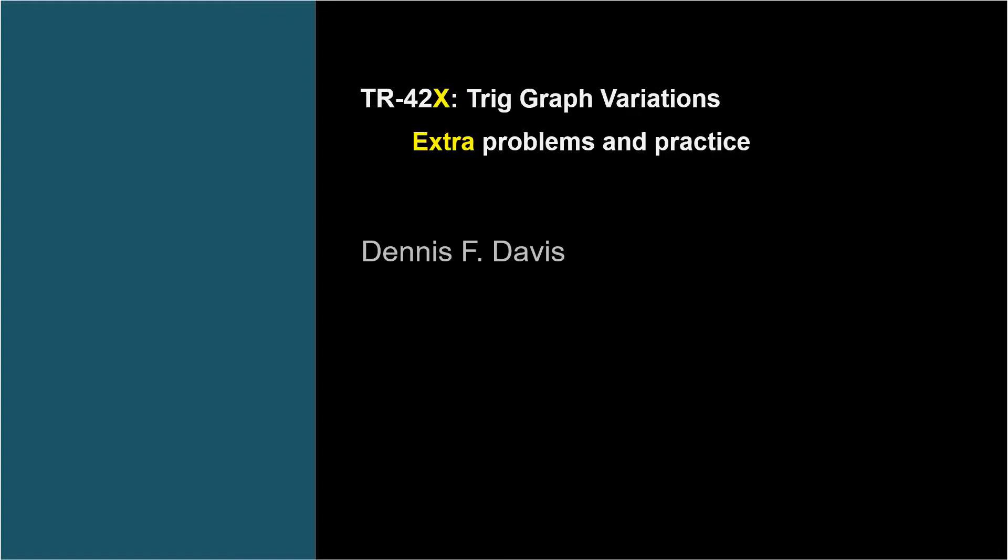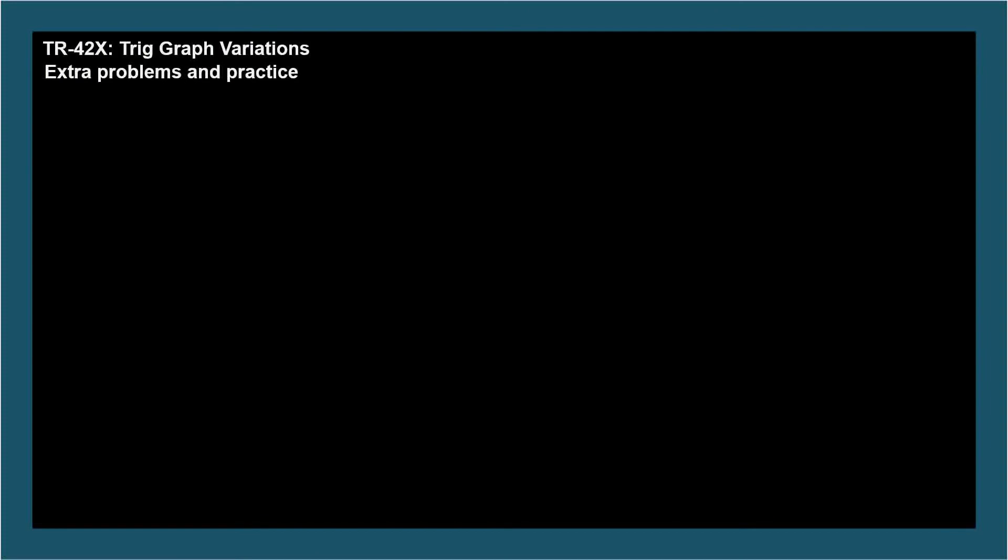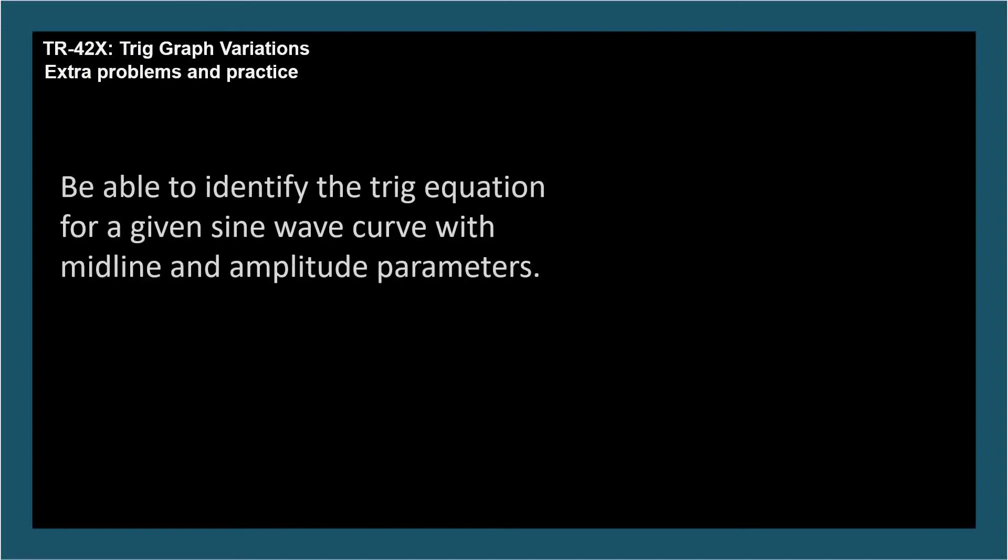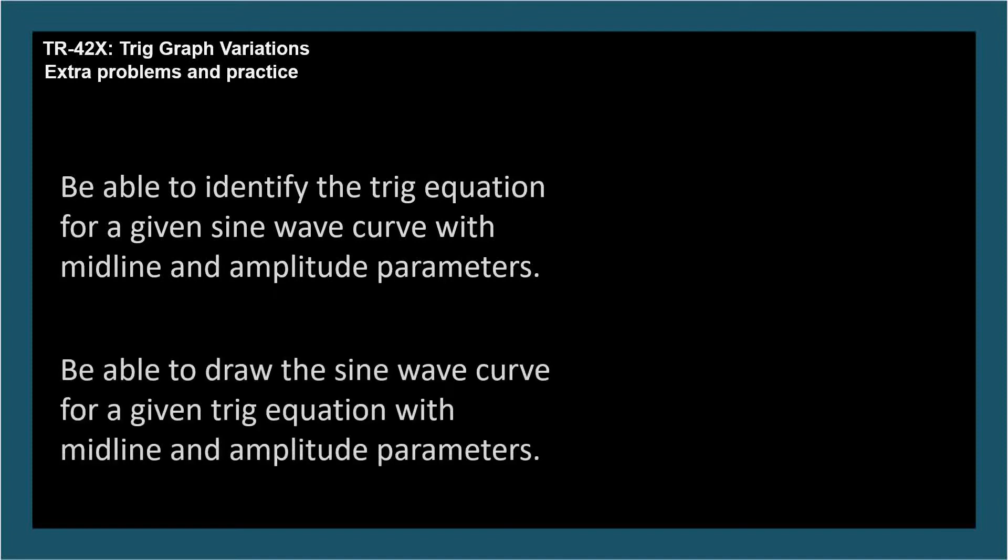There are two learning objectives for TR-42. Be able to identify the trig equation for a given sine wave curve with midline and amplitude parameters, and be able to draw the sine wave curve for a given trig equation with midline and amplitude parameters. So, given a curve, determine the equation, and given an equation, draw the curve. We're considering only the amplitude A and vertical shift D parameters in these problems.